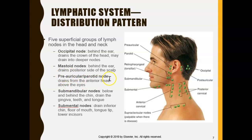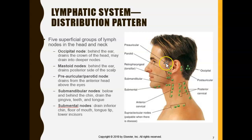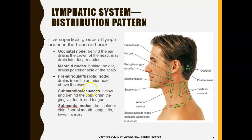The preauricular or parotid node — remember this is near the parotid gland, and preauricular means in front of the ear — drains the anterior head above the eye. Imagine all the lymphatic vessels and fluid over there going down to this checkpoint, where everything gets checked and all the bad stuff is filtered out, and then they work their way down.